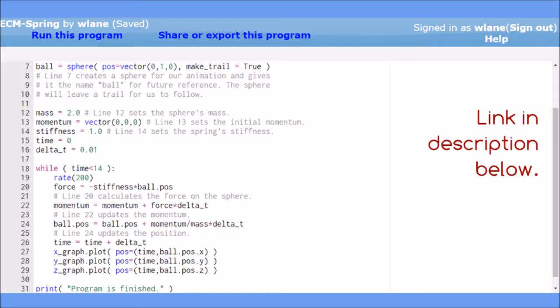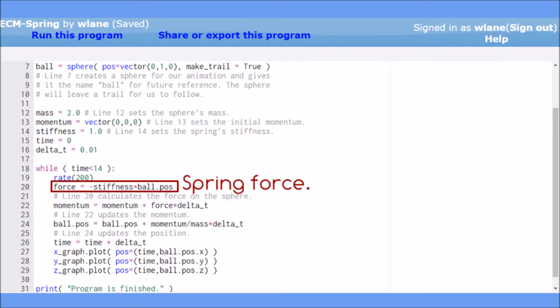This code is exactly the same as the previous, but with the constant force replaced by the spring force, negative times the spring stiffness times the position.